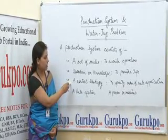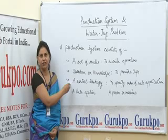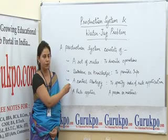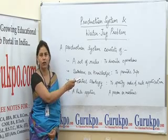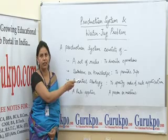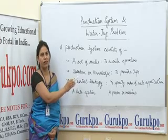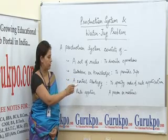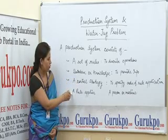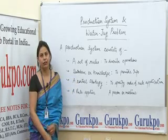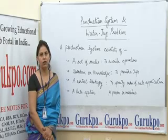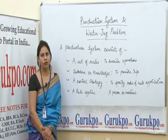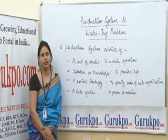Third, a control strategy should be defined in that system to specify the order of rule application in a predefined, well-defined manner. Fourth, an apply component should be there to maintain all that system and to work on the operations of all those systems.